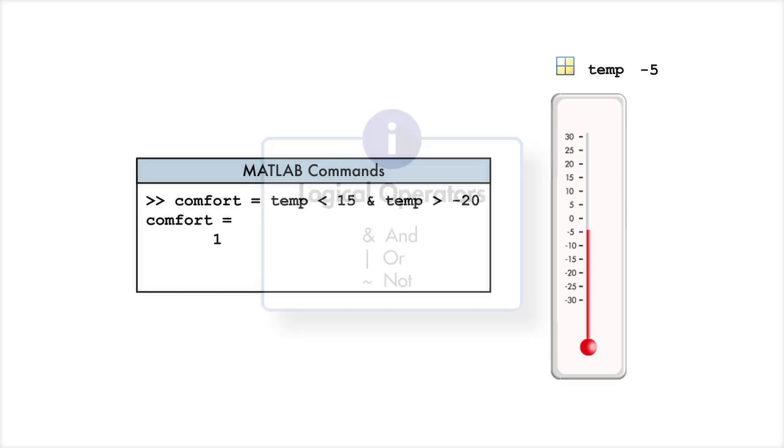We now have a single expression that represents a comfortable temperature range based on our original criteria. But, if we wanted to check that only one condition is true, or that all conditions are false, we can choose the logical operator that fits our need.